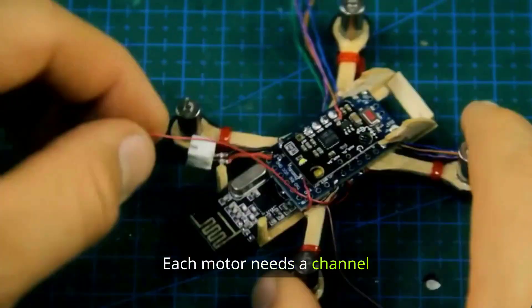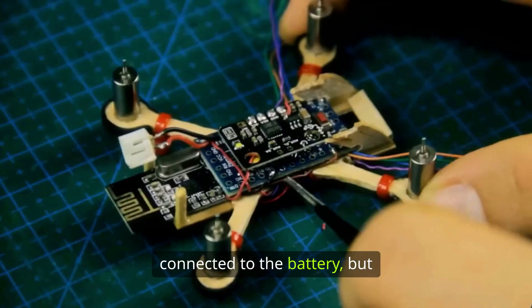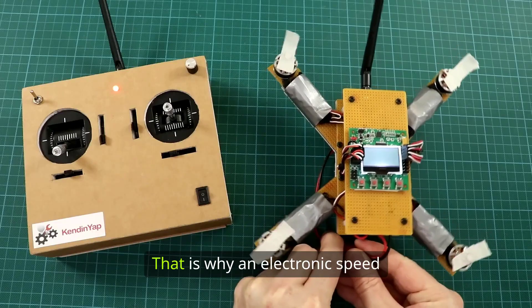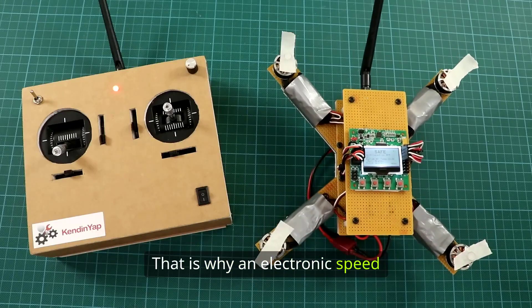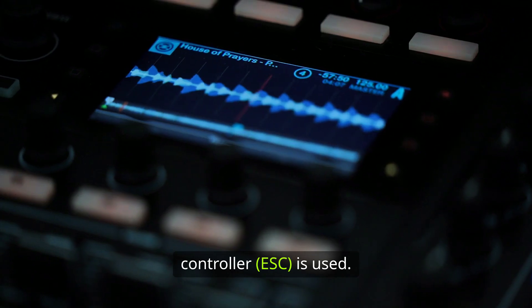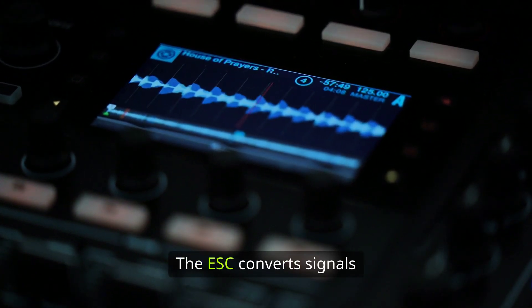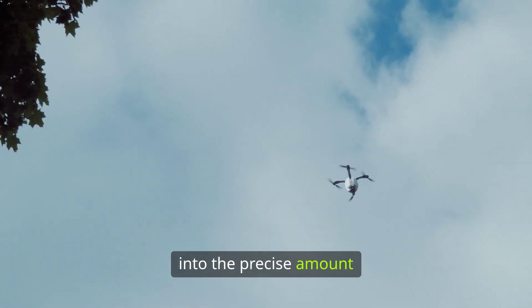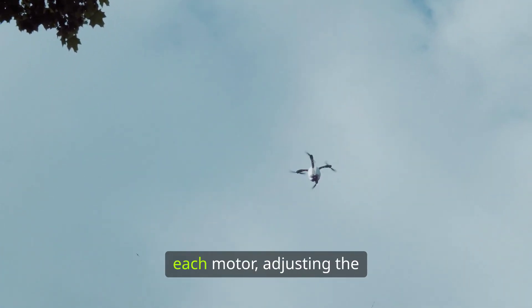Each motor needs a channel connected to the battery, but it cannot draw power directly. That is why an electronic speed controller (ESC) is used. The ESC converts signals from the flight controller into the precise amount of electricity needed for each motor,